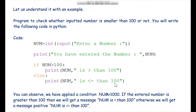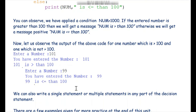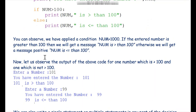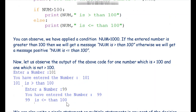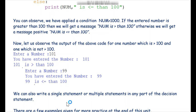Let us see the runtime output. Suppose the user enters 101 — we get the message '101 is greater than 100' because the condition is true. In the second run, we enter 99, which is less than 100, so the if condition is false and Python executes the else part: '99 is less than or equal to 100'. I hope you have revised and recapped the if-else statement in an enjoyable and interactive manner. Thank you for watching this video.